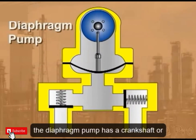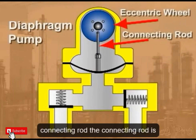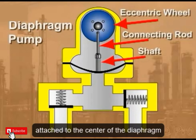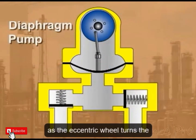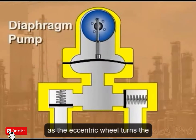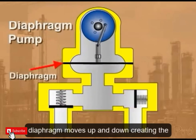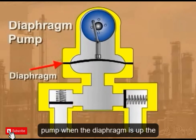The diaphragm pump has a crankshaft or an eccentric wheel attached to a connecting rod. The connecting rod is attached to a shaft, and the shaft is attached to the center of the diaphragm. As the eccentric wheel turns, the diaphragm moves up and down, creating the pumping action required to operate the pump.